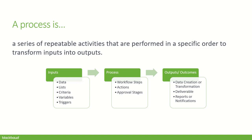The output or outcome of the process can be that you're creating new data, transforming data — taking several data points and turning it into an engagement score — or there's a deliverable, like a merged letter that emerges on the other side of the process to be mailed to the donor. Or as we get into next week's workshop, it could be a report or notification delivered by email with the latest gifts. We're thinking about what is all the data, criteria, variables, trigger, steps, and ultimately the outcome.